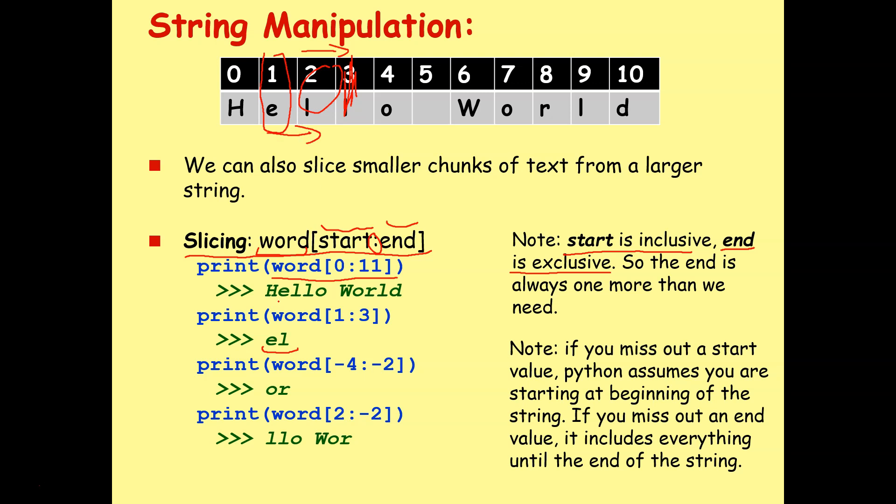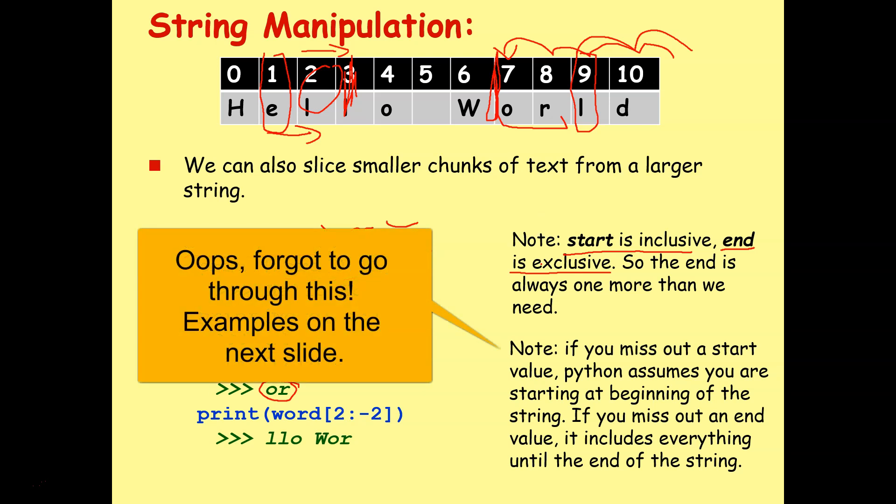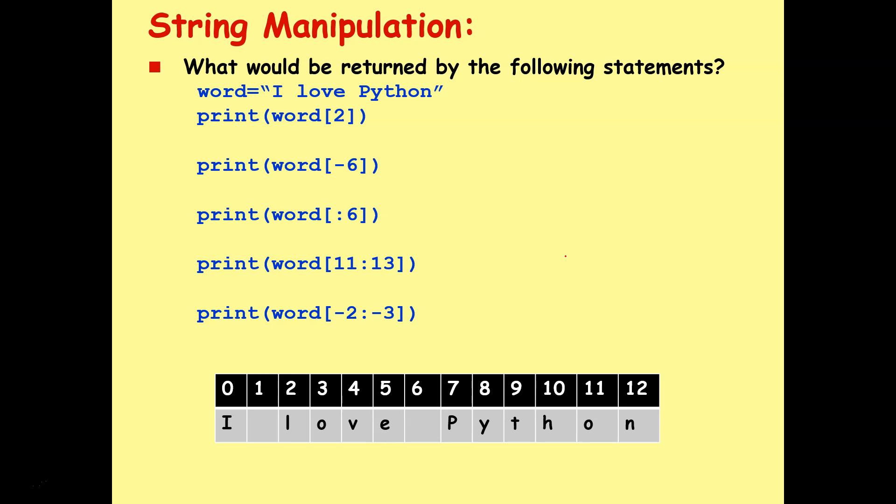I can do that in reverse. I can say print word minus 4, colon minus 2, and that will give us OR. Why? Let's go back. Minus 1, minus 2, minus 3, minus 4. We're going to start here. Minus 2 would be minus 1, minus 2. So stop before we get to that position. So that just gives us essentially position 7 and position 8, which is OR. Minus 4 to minus 2, not including the minus 2, so minus 4 and minus 3, OR.